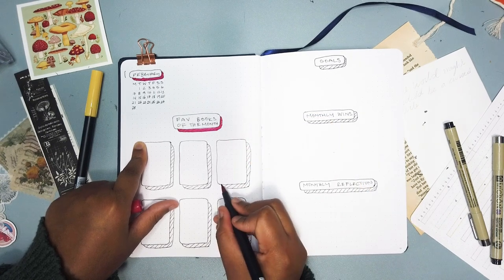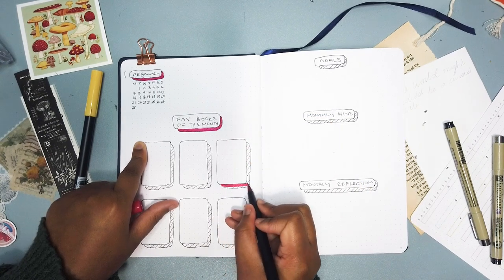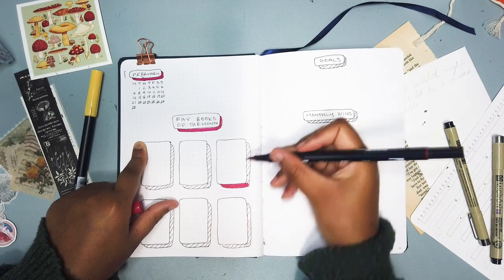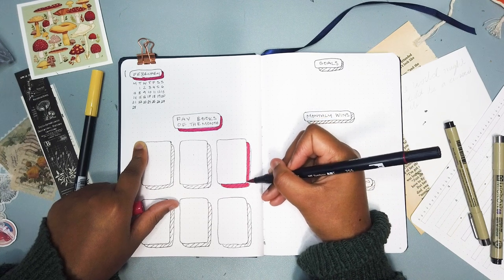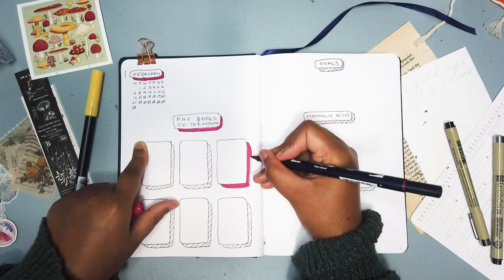So I have a favorite books of the month section, a goal section, a monthly win section, and a monthly reflection section. So I basically have those there for me to fill in.